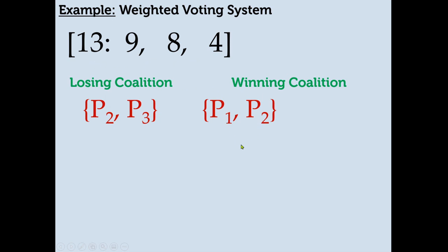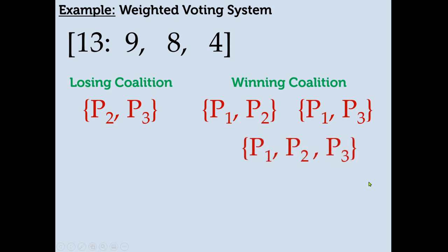Player 1 and Player 2 form a winning coalition because 9 plus 8 equals 17, which meets the minimum number of votes to pass — quota. Player 1 and Player 3 gives 13, which also meets quota. The last winning coalition for this example is the coalition between all three players. When we have a coalition of all the players, we call that a grand coalition.